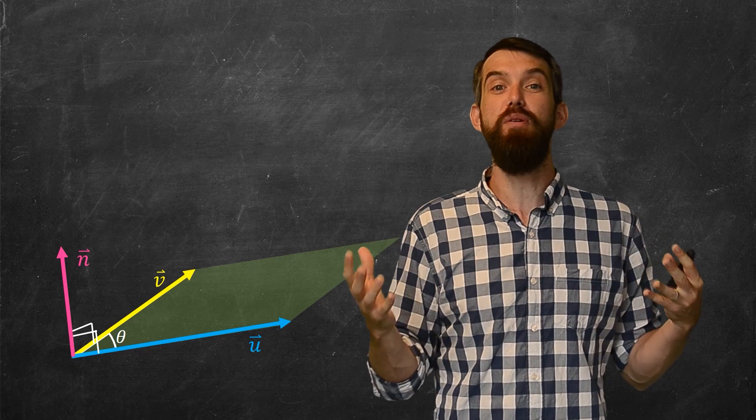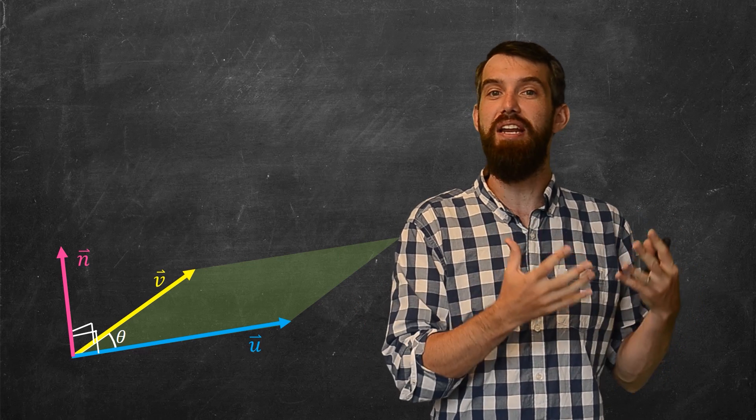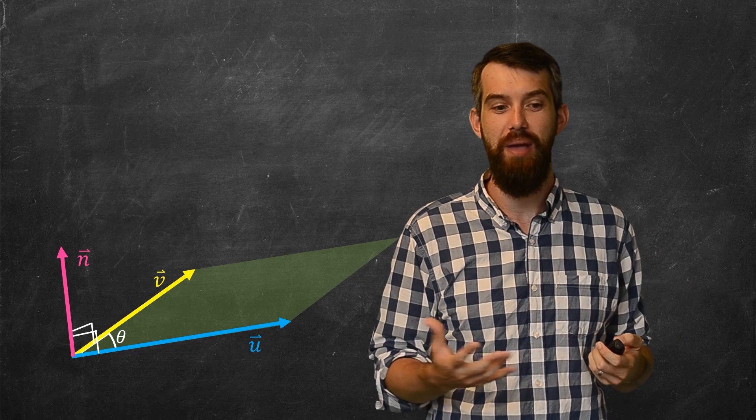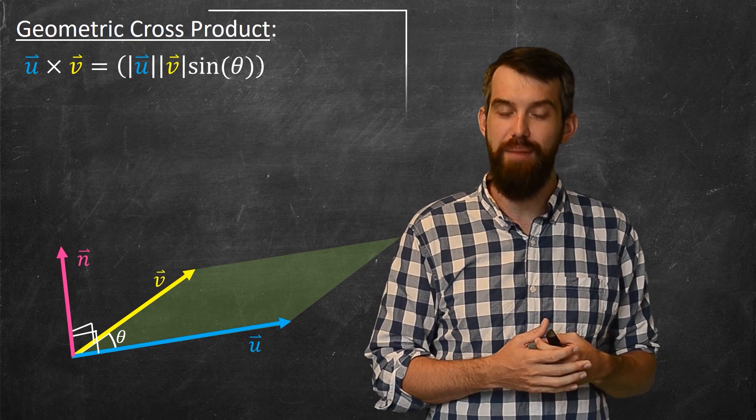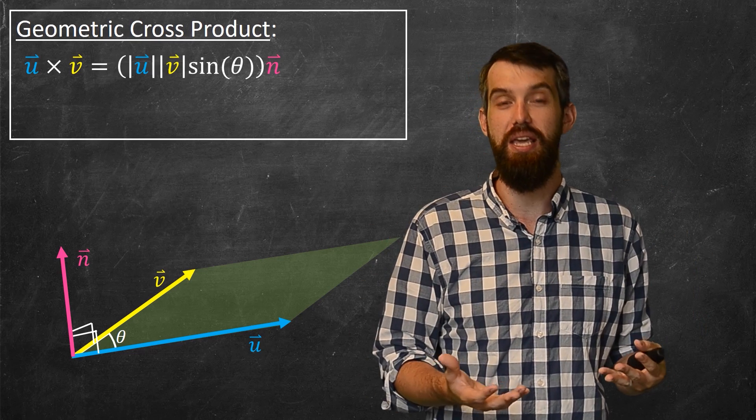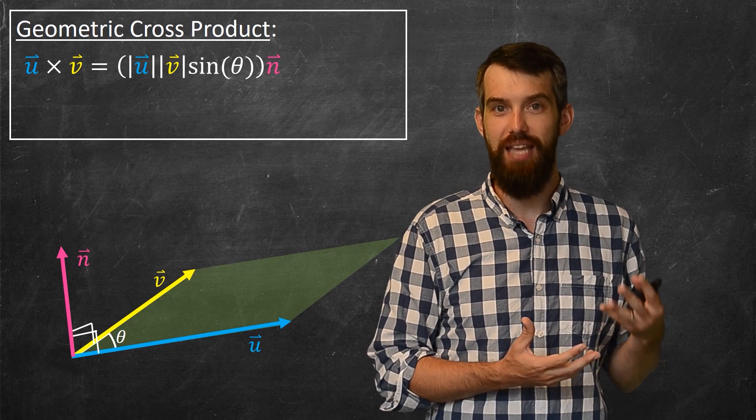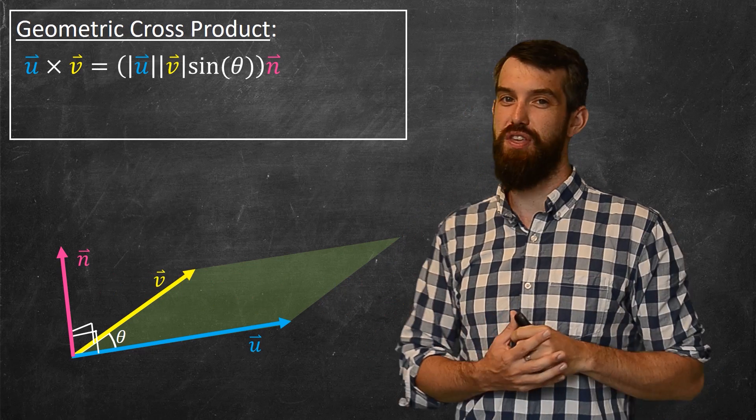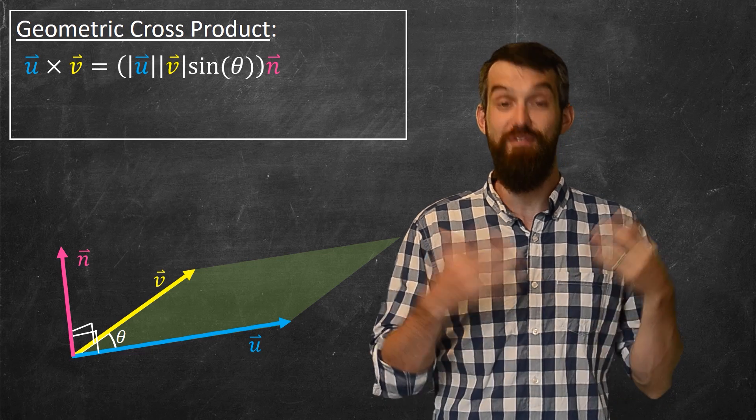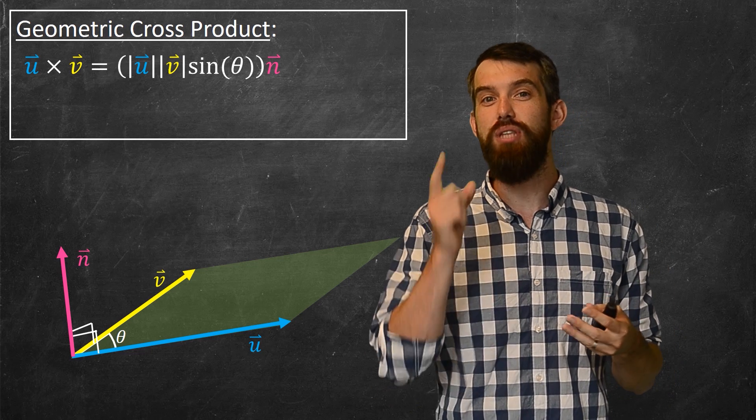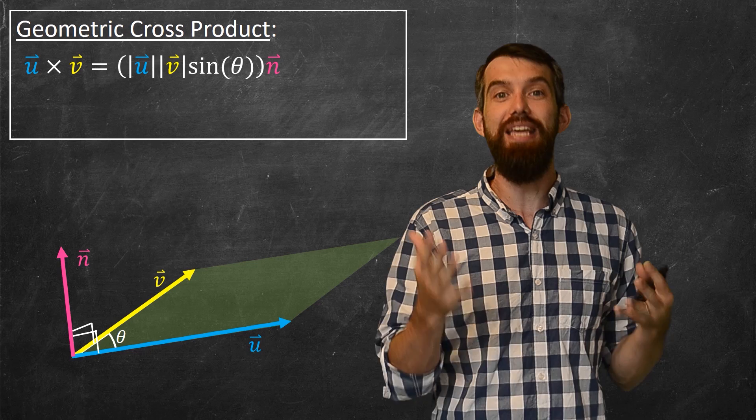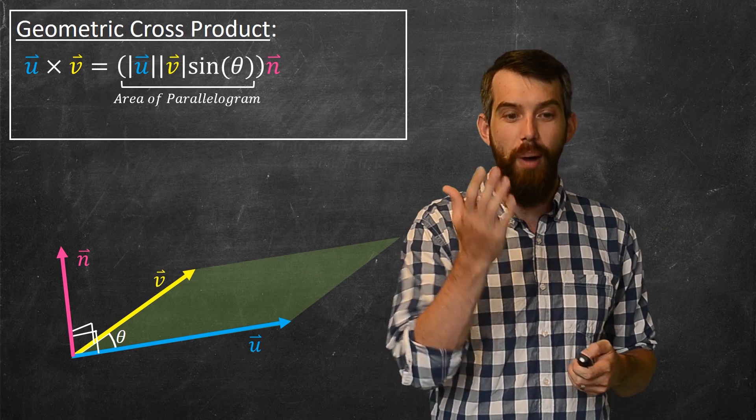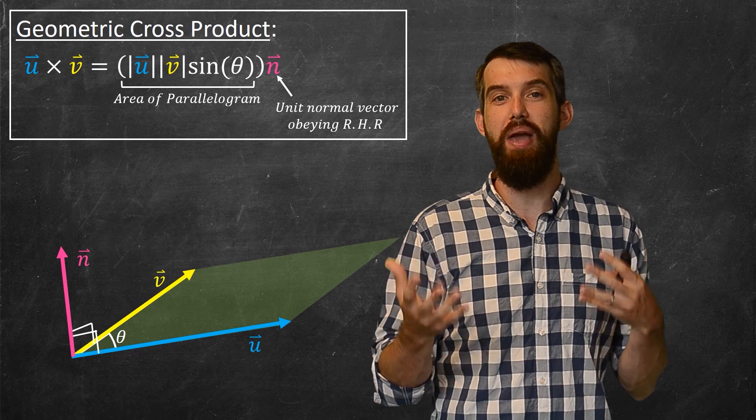So I'm going to put these two different problems together of finding a normal vector to a plane, as well as the area of a parallelogram, and thus I'm going to define my geometric cross product to be that the cross product of u and v is the vector that is in the direction of the unit normal, the n vector, but whose length, the scalar multiple, is the area of the parallelogram. Namely, it's the area of the parallelogram multiplied by that unit normal obeying the right hand rule.